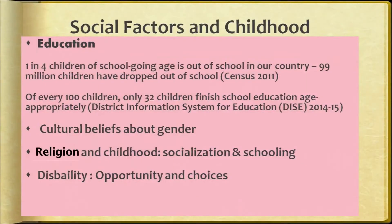So much change is happening with technology that we cannot do without literacy. We also need to look at cultural beliefs about gender, religion, childhood socialization, schooling, disability, opportunities, and choices. Some families and communities believe girls should be married very early — data shows a large number of girls under 15 are married and have a child. We must ask whether a girl's body is ready for this and have dialogues with parents in educational settings.